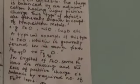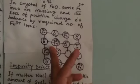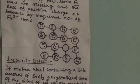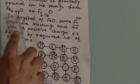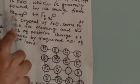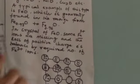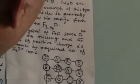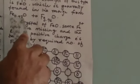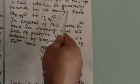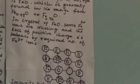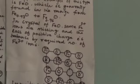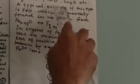This is called metal deficiency defect. Numerical problems based on the calculation of the number of Fe²⁺ and Fe³⁺ ions or their percentages are commonly asked — for example, if iron oxide has the composition Fe₀.₉₃O, meaning for 100 oxygen atoms there are only 93 iron atoms, find the ratio of Fe²⁺ and Fe³⁺ ions. The composition of iron oxide may vary in the range of 0.930 to 0.960. Similar numerical problems may be based on cuprous oxide or nickel oxide — three or four such problems are given in the NCERT exercise.